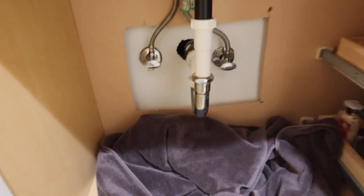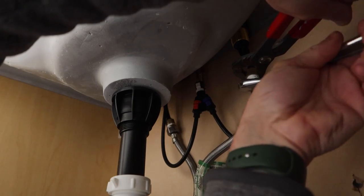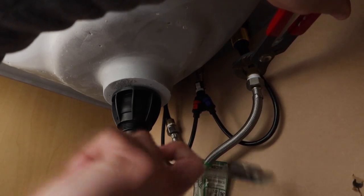Next, I'm going to throw a towel under the sink to catch any water that comes out of the water lines when I disconnect them. From there, I'm using my crescent wrench to loosen and remove the existing water lines.